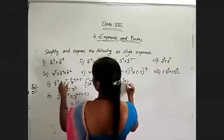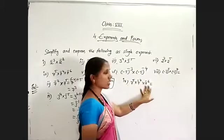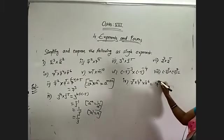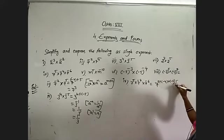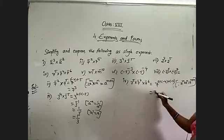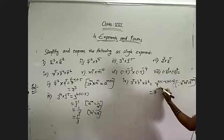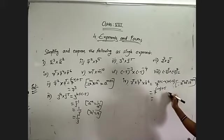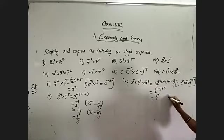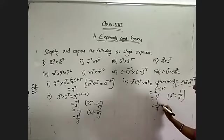Fourth problem: 7 power 5 into 7 power minus 4 into 7 power minus 6. All three have same base, every term is multiplied. So add all exponents: 5 plus minus 4 plus minus 6 equals 5 minus 10 equals minus 5. So 7 to the power of minus 5. It is in the form a power minus n, so simplify to 1 by a to the power of n — that is 1 by 7 to the power of 5.